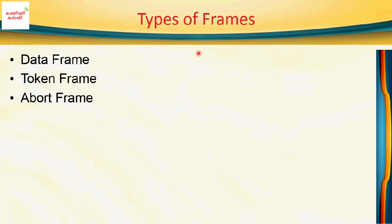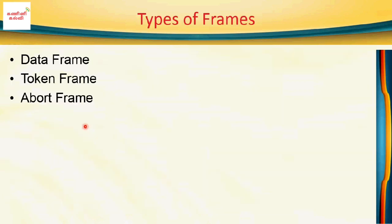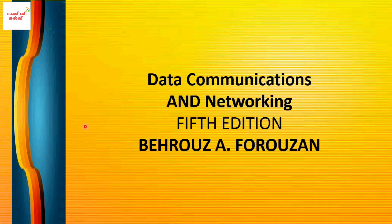To summarize the frame types in token ring: there is the token frame, the data frame, and the abort frame. The token frame contains start delimiter, access control, and end delimiter. The abort frame contains a start delimiter and end delimiter. These are the three types of frames used in token ring. That is all about token ring. Thank you for watching this video.